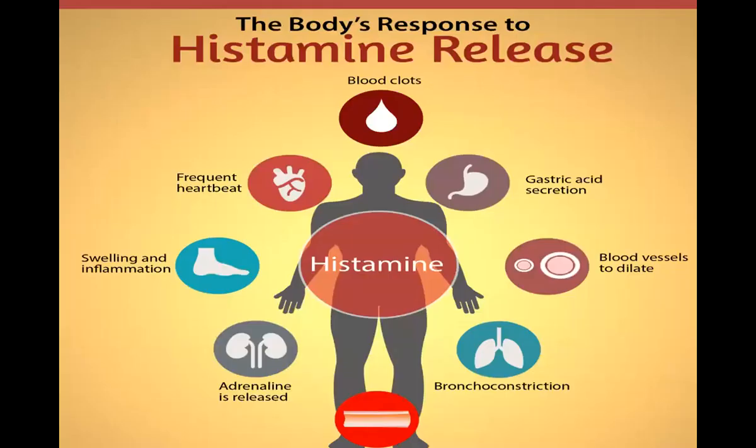Histamine is released mainly by the mast cells in the tissues and the basophils in the blood. Histamine also causes increase in vasodilation and capillary permeability, playing an important role in inflammation.